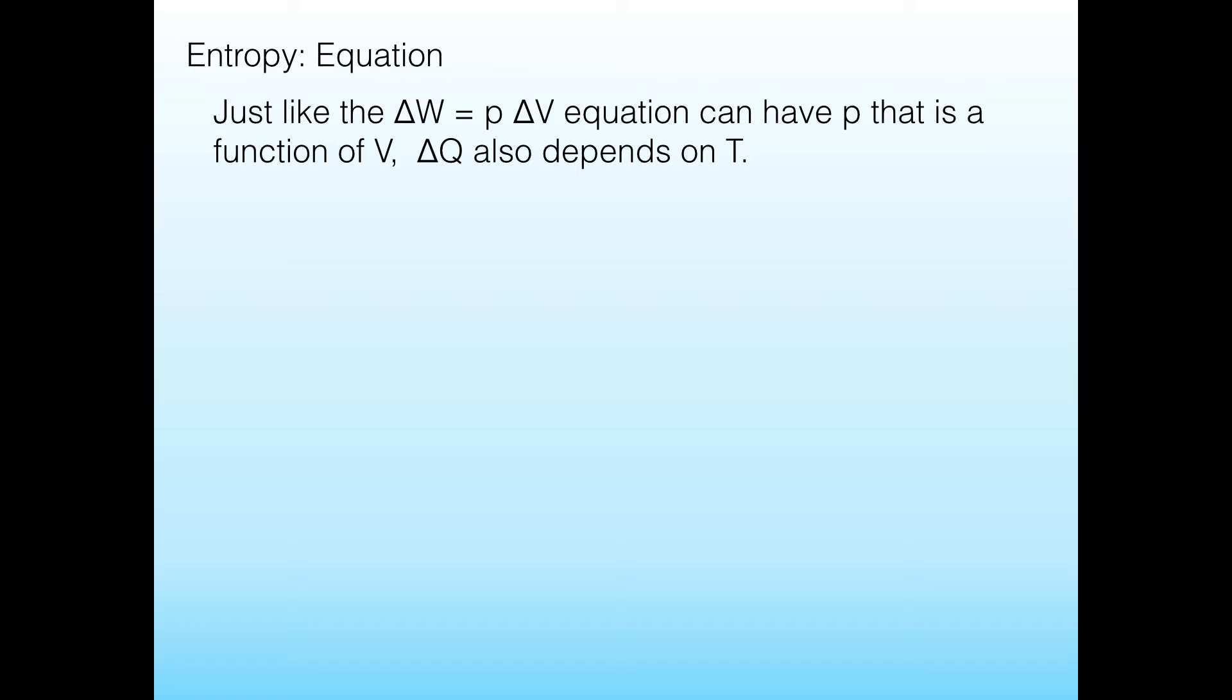So just like we had before with the change in work, which was equal to PdV, this equation can actually have P depending on volume. So what I mean by that is that pressure can be a function of volume. So that means that when you want to calculate the work, it's not simply good enough to just say that it's some random pressure times the change in volume. Pressure can change with the volume, and so that means you have to be able to figure out what it is.